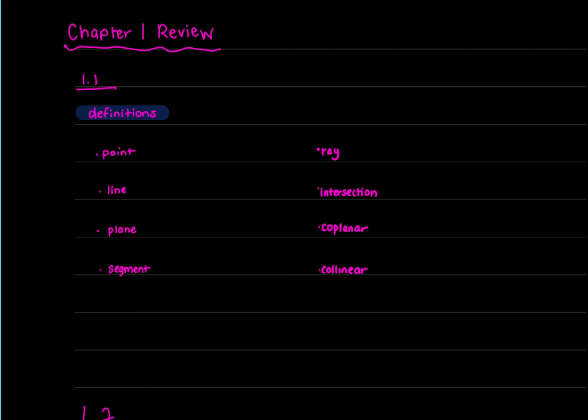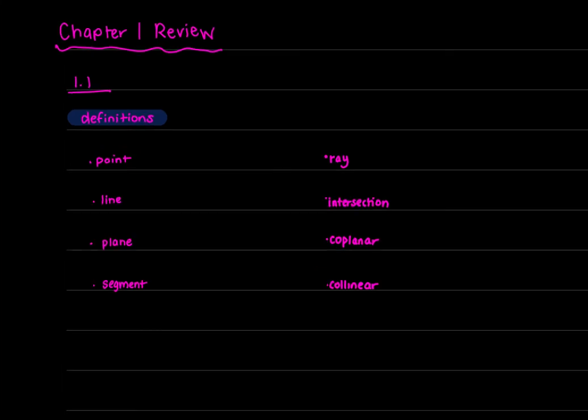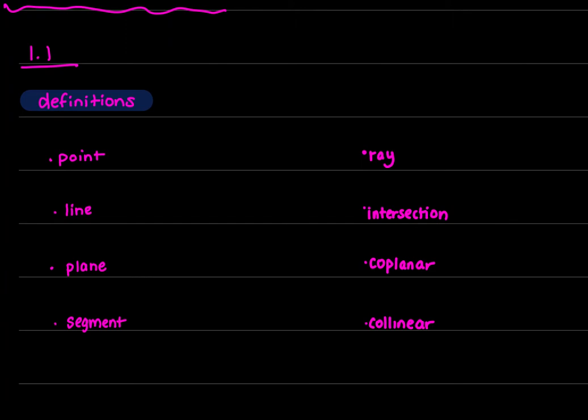Reviewing definitions from section 1.1: A point has no size or thickness, represented by a single dot, and all geometric shapes are made from points. A line has length, extends in both directions, unending, one dimension. A plane is two-dimensional with no ending, extends in all directions, no thickness—even though we draw it with boundaries. A segment has two endpoints. A ray has one endpoint and one arrow. Intersection is where two things meet. Coplanar means lying on the same plane. Collinear means points on the same line.